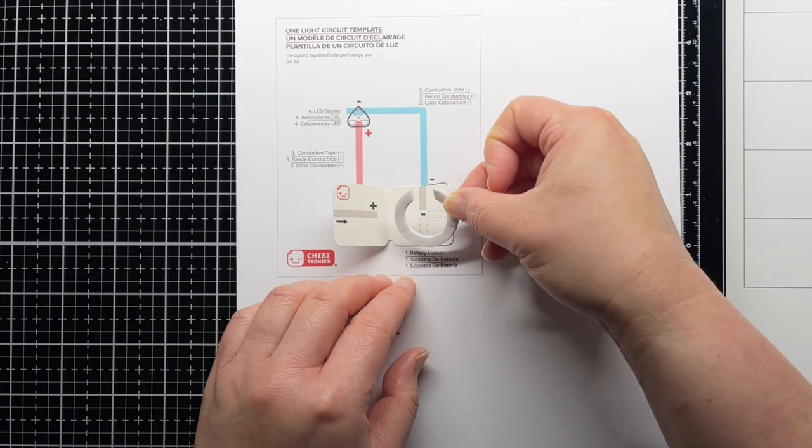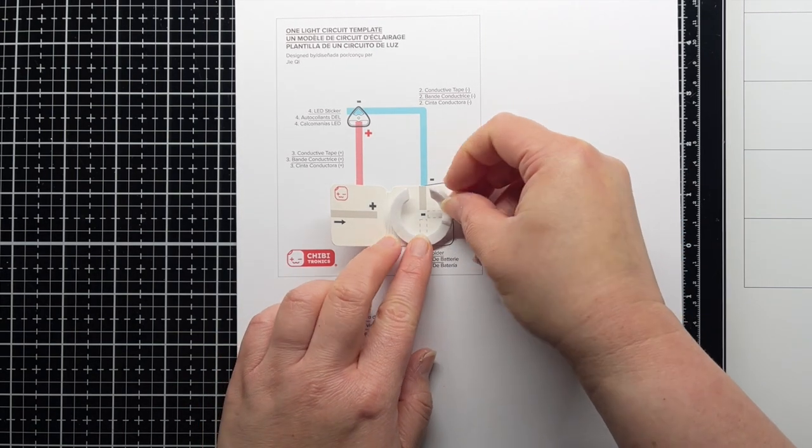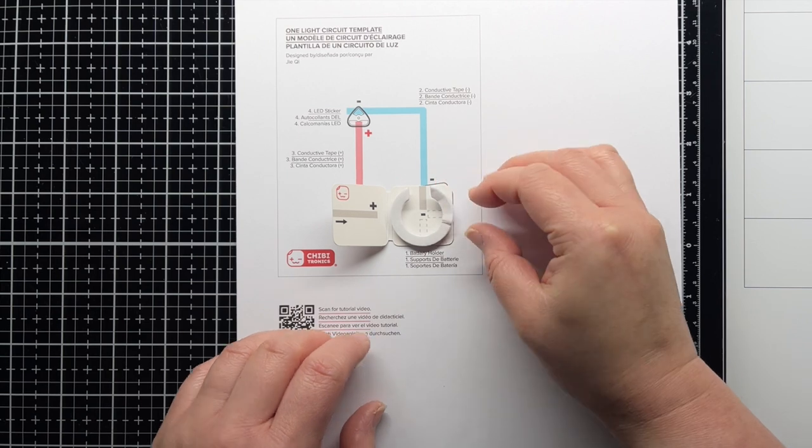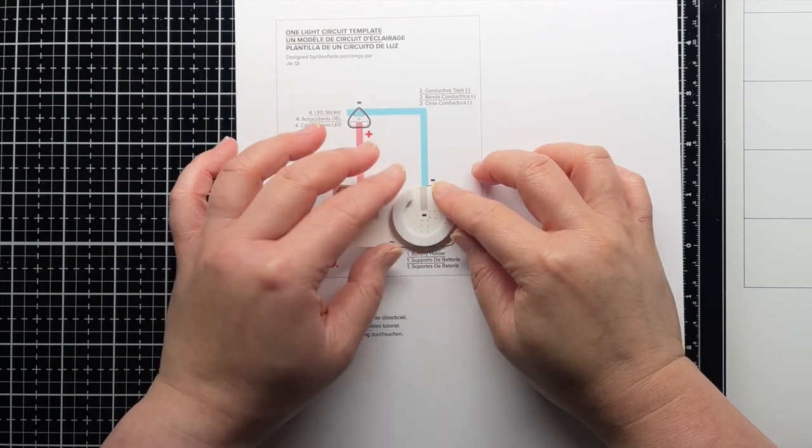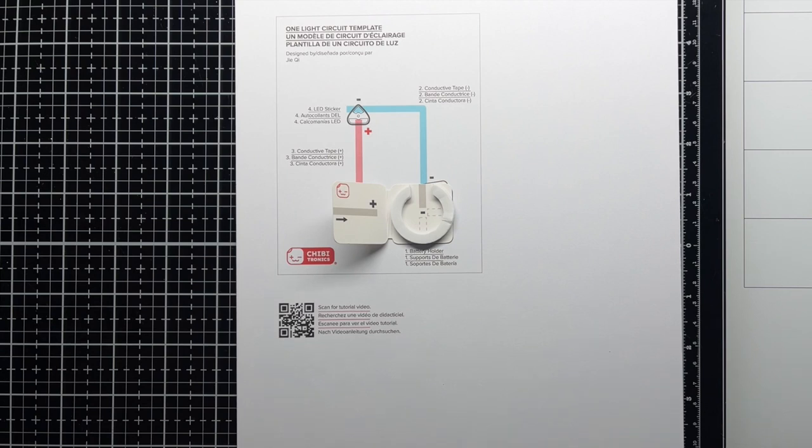Next, you'll peel the adhesive backing off one side of the C-shaped foam tape piece. Adhere it to the inside of the battery holder so that the opening is on the top and you can see the gray lines on the holder in the opening.